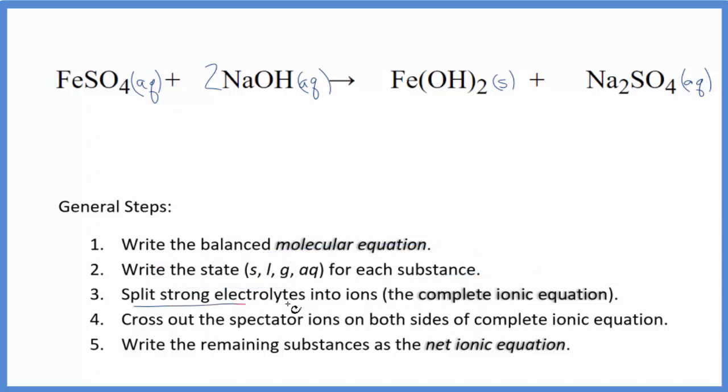Now we can split the strong electrolytes into their ions for the complete ionic equation. So the sulfate ion here is the whole thing 2 minus. Good one to remember. So the iron, which is a transition metal, it has to be 2 plus. So we have the iron 2 ion, and I won't write the states now. Let's do that at the end. Plus the sulfate ion.